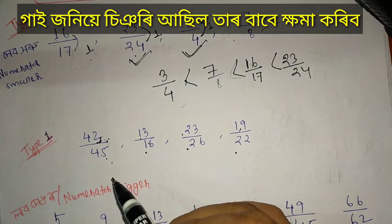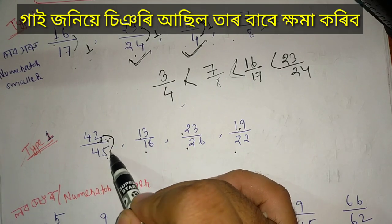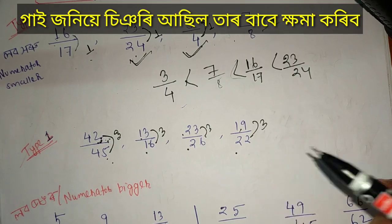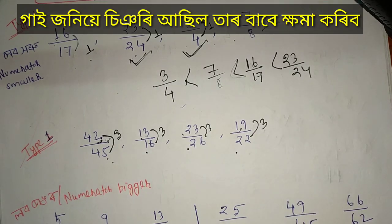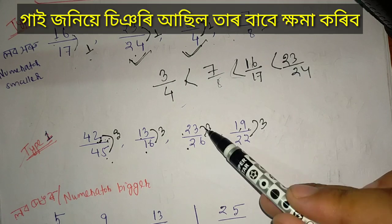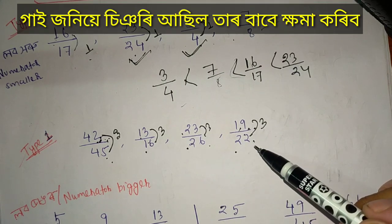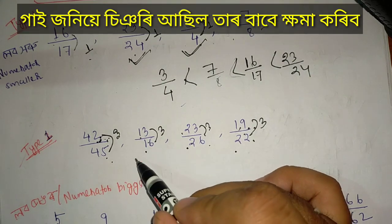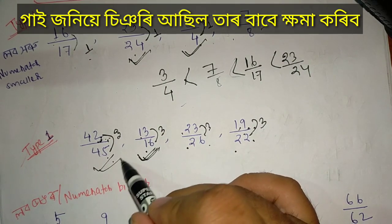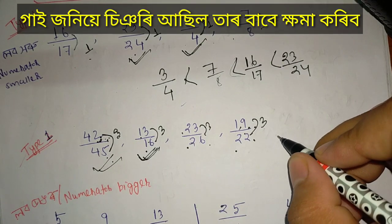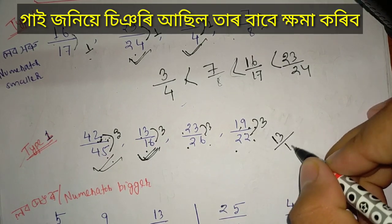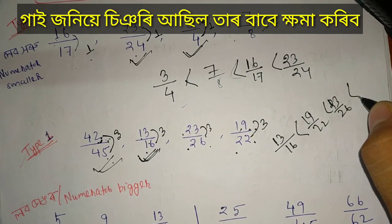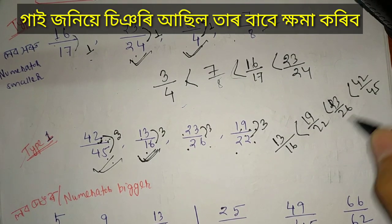First of all, we are working with a fraction using this trick — checking the difference. The correct ascending order answer for this series is: 13 by 16, 19 by 22, and 42 by 45. This is the correct answer.